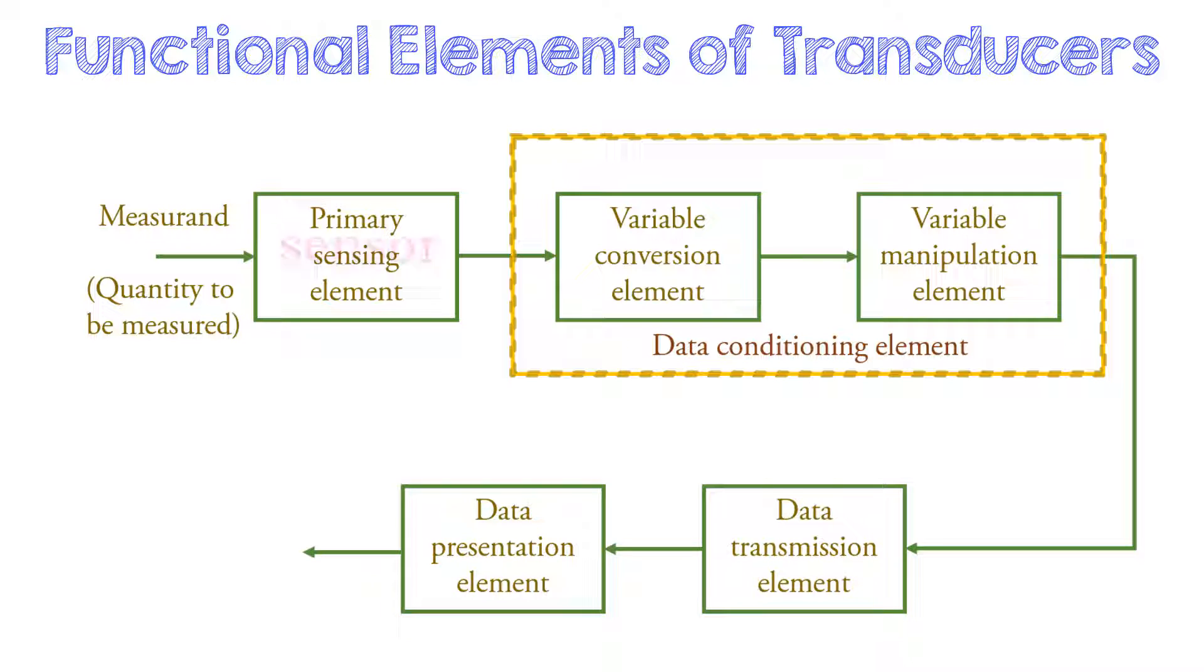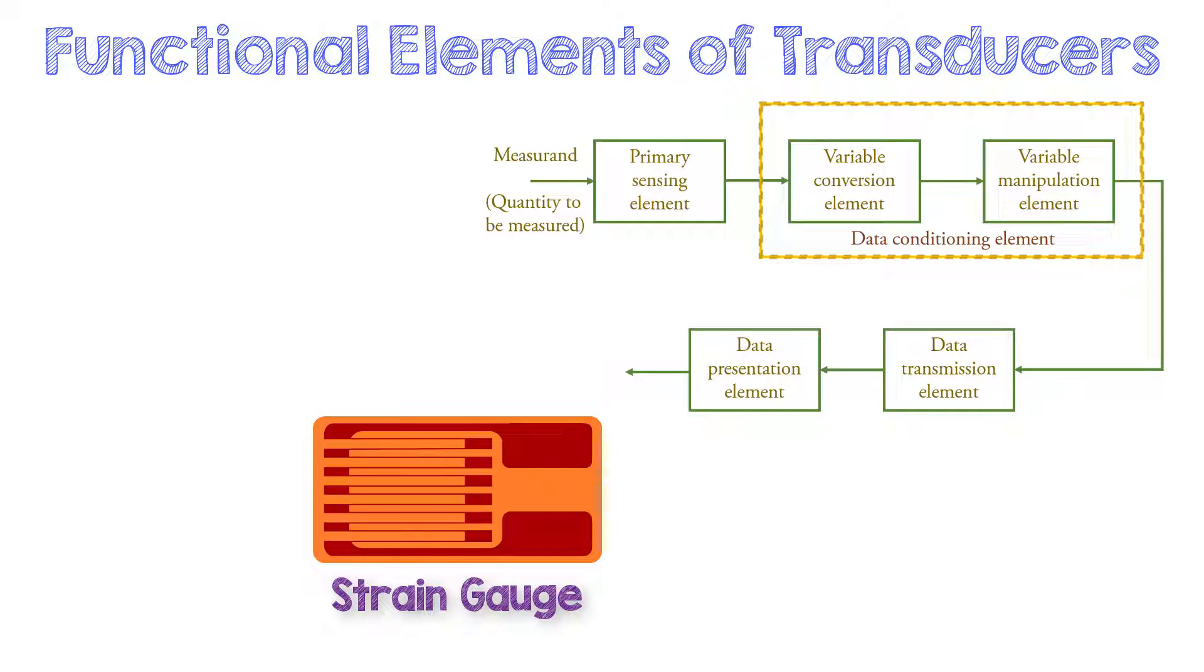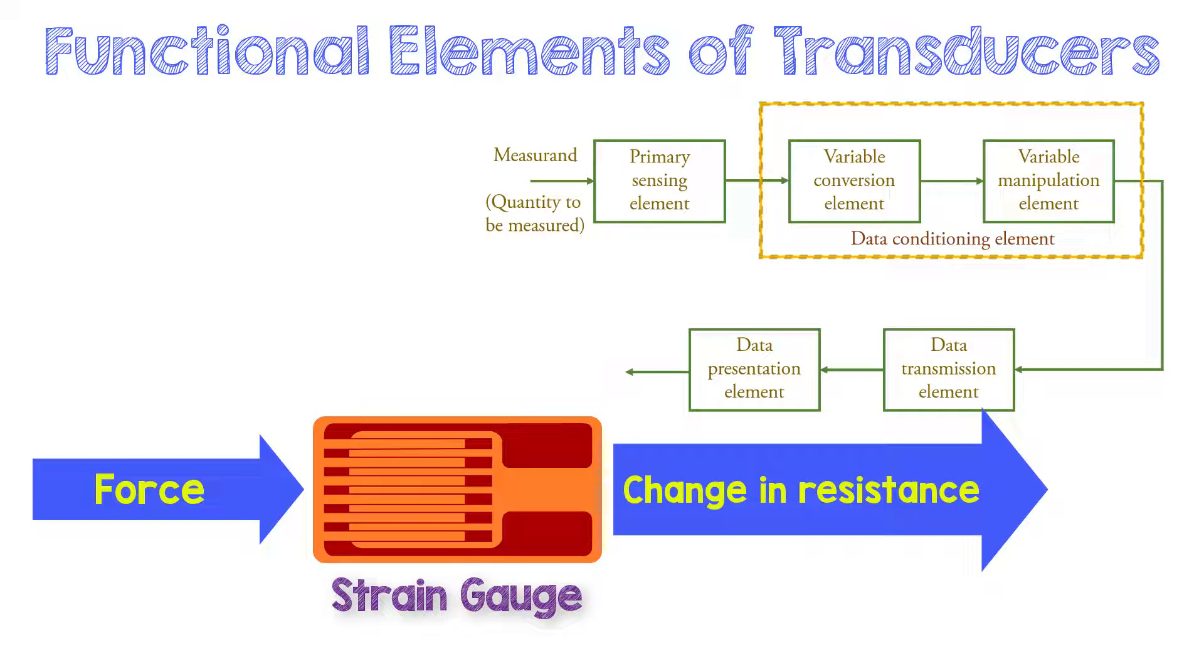The primary sensing element is the actual sensor. This block is in contact with the measurand or the quantity to be measured. Primary sensing element converts the physical quantity under measurement into an analog signal. An example of such an element is a strain gauge. Strain gauge is a device used to measure load or force. As force is applied to the strain gauge, it gives a change in resistance.